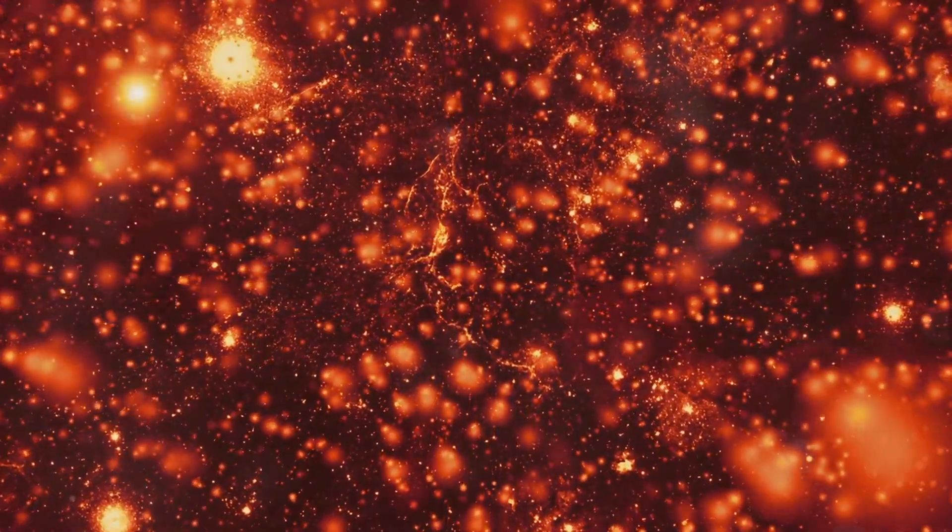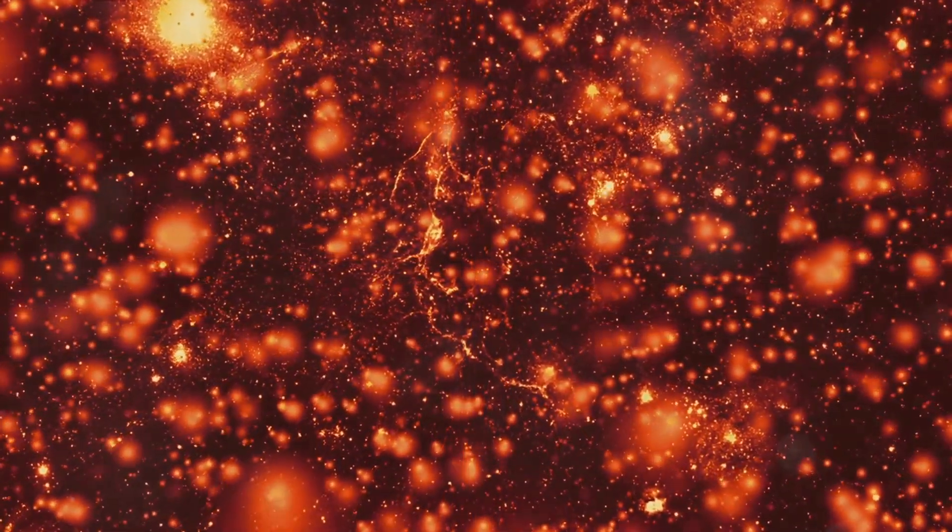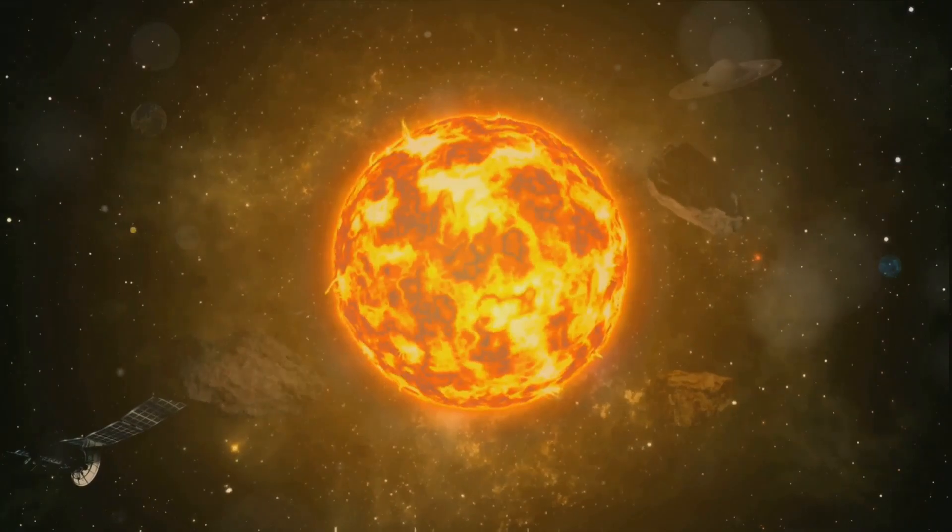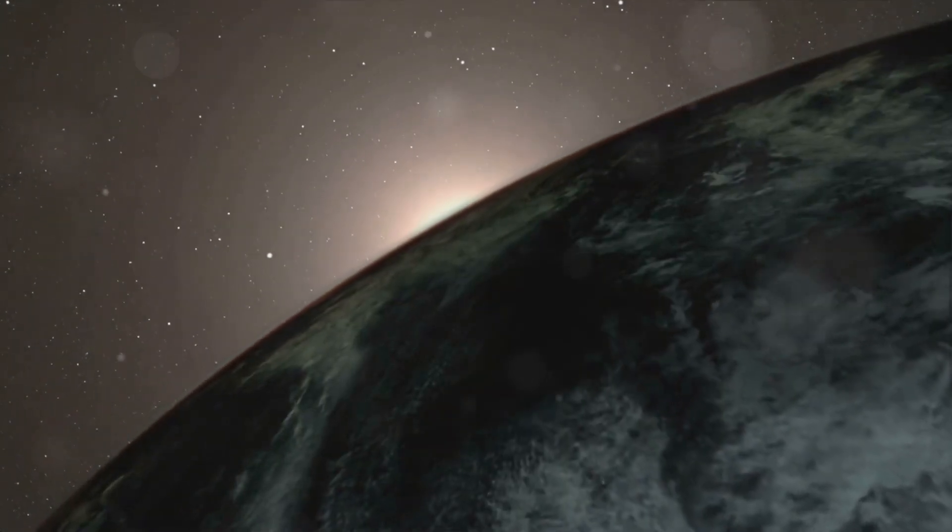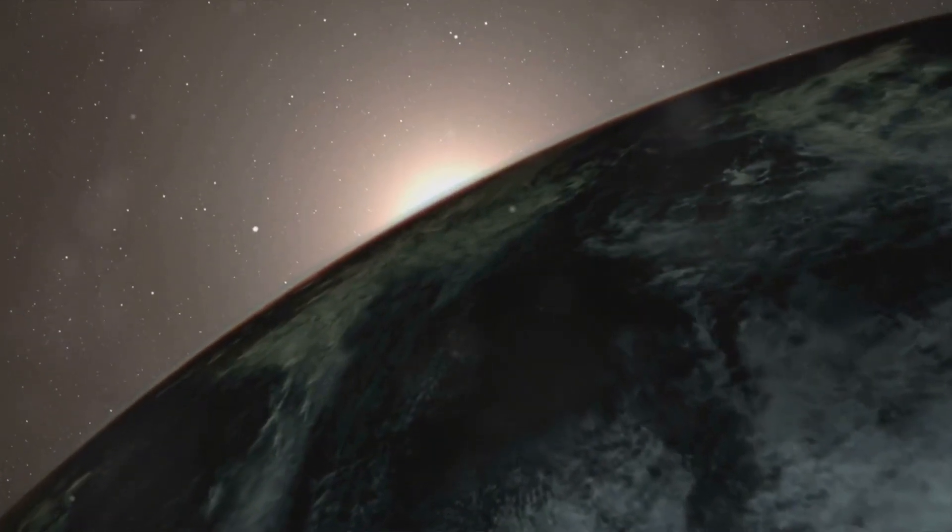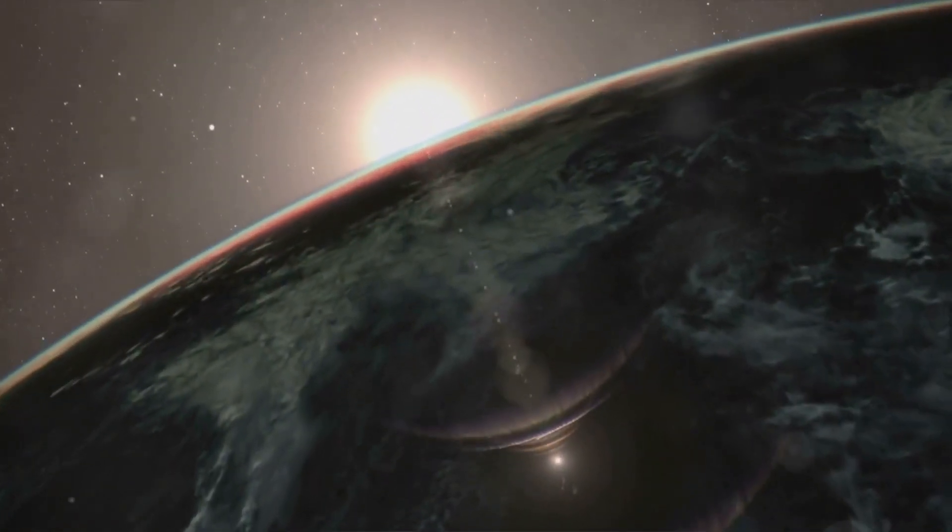The Sun's outer layers will expand beyond the orbits of Mercury, Venus, and possibly even Earth. The intense heat and radiation from the red giant Sun may make Earth uninhabitable. After the red giant phase, the Sun will shed its outer layers, creating a beautiful cosmic spectacle known as a planetary nebula.